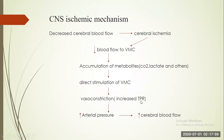Stimulation of the vasomotor center causes vasoconstriction, increasing total peripheral resistance. Since blood pressure equals total peripheral resistance multiplied by cardiac output, the increase in peripheral resistance raises arterial blood pressure, which ultimately improves cerebral blood flow. All three mechanisms — baroreceptor reflex, chemoreceptor reflex, and CNS ischemic mechanism — come into action within seconds to minutes.